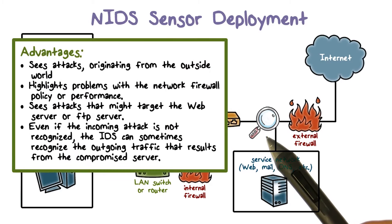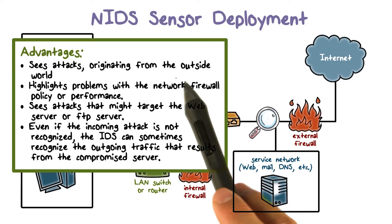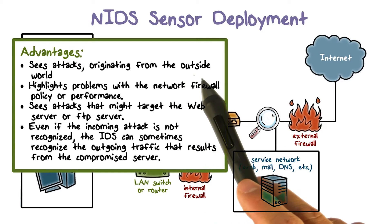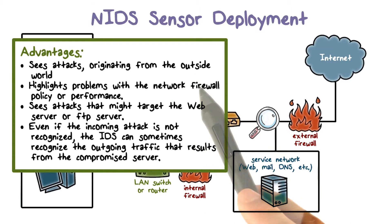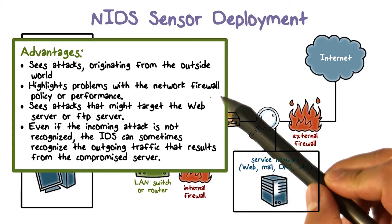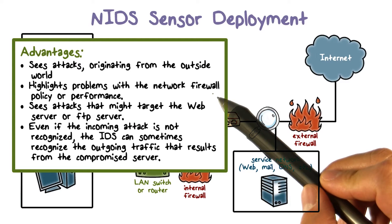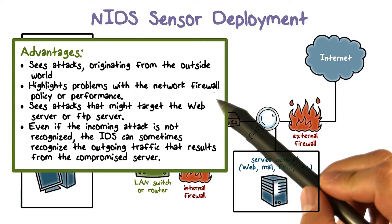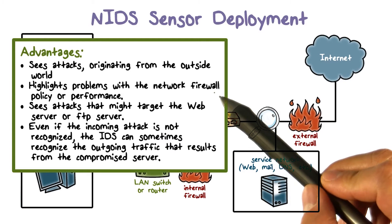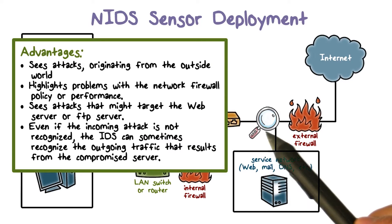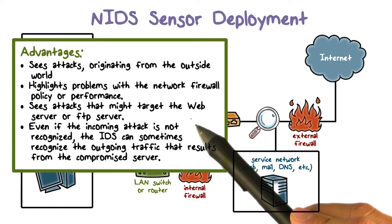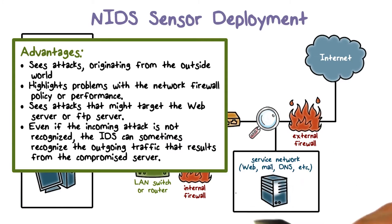This position has a number of advantages. Obviously, you can see attacks from the outside world. By comparing the logs of the firewall and the IDS, we can also find out whether the firewall had missed an attack that it should have prevented. The IDS at this location can also detect attacks that are targeted at the public facing servers.